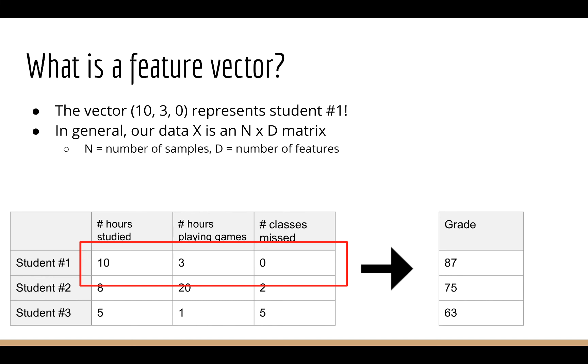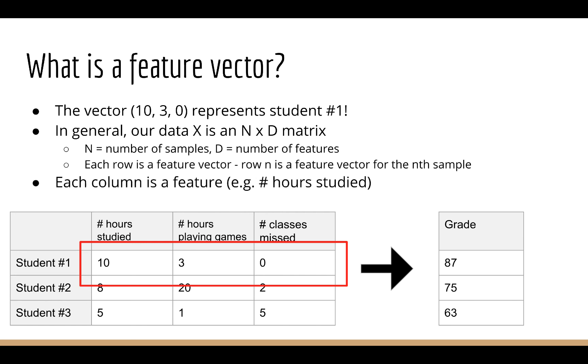For example, we have d equals 3 here, and the input features are how many hours you studied for the exam, how many hours you spent playing video games during the exam period, and how many classes you missed this semester. What I want you to notice is that each row of this table is a different feature vector. What's super important to understand about this is that no matter what data set we looked at, our data always looked like this. X was always a 2D matrix of shape n by d. Doesn't matter what the features are or what data set they came from.